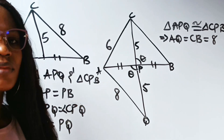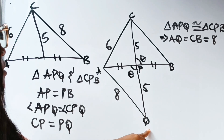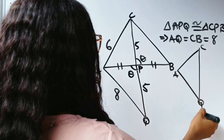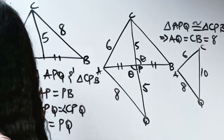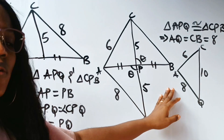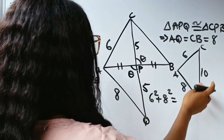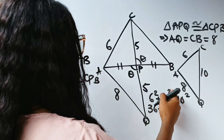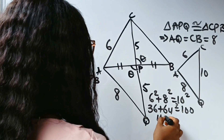Now let us consider triangle CAQ. In this triangle, AC is 6, AQ is 8, and CQ is 5 plus 5 which is 10. Let's use the Pythagorean theorem to verify: 6 squared plus 8 squared equals 36 plus 64, which equals 100.